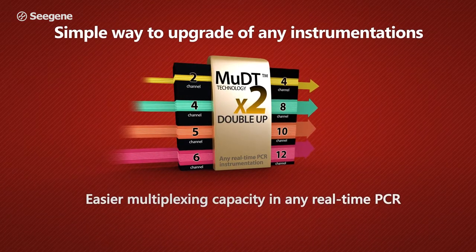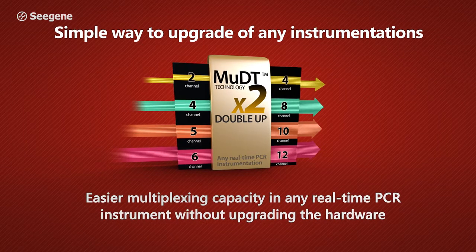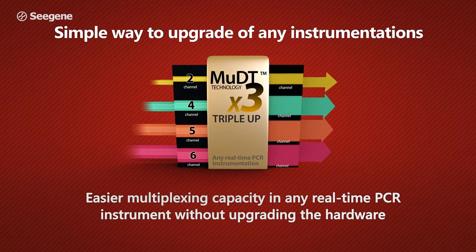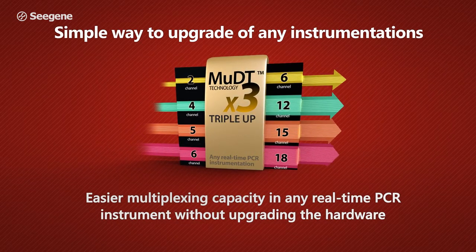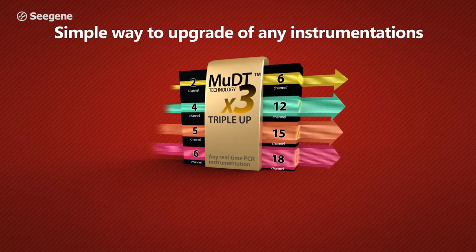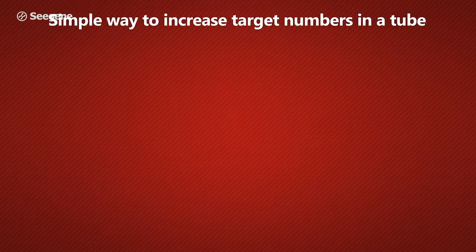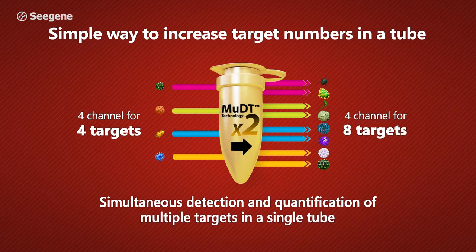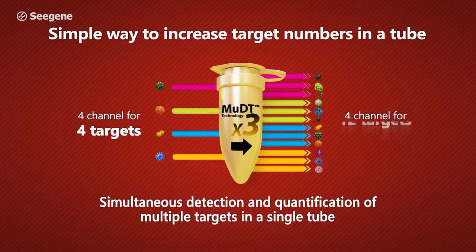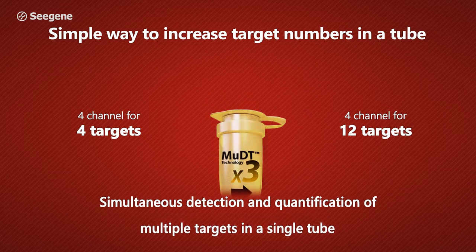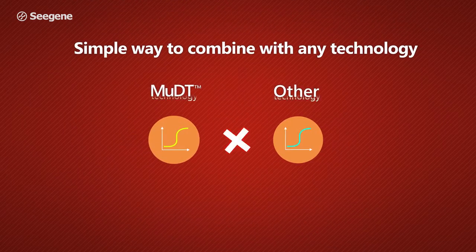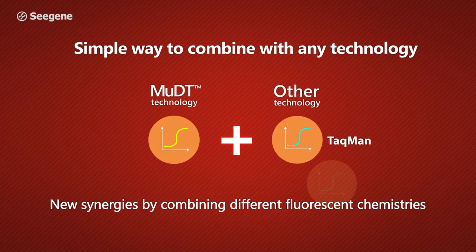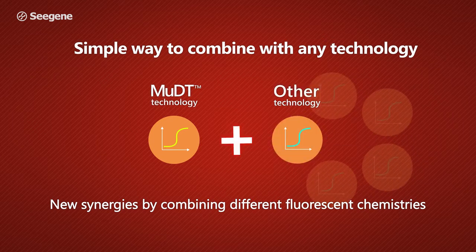MUDT increases the multiplexing capability of any existing real-time PCR instrument without requiring new hardware. It increases the number of targets per tube up to three times while still providing superior quantitative CT information. MUDT works with any fluorescent chemistry, opening new possibilities for the molecular diagnostic industry.